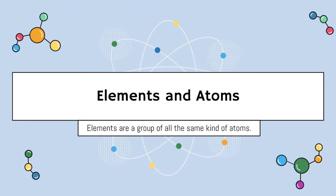Elements and atoms. Elements are a group of all the same kind of atoms, and this is what we're going to talk about today. We're going to talk about elements and atoms, what elements look like on the periodic table, and what information we can get about those elements on the periodic table. We're going to know what those atoms look like per the elements. Go slow and you'll be able to know all of the information that we're trying to convey today in our lesson.